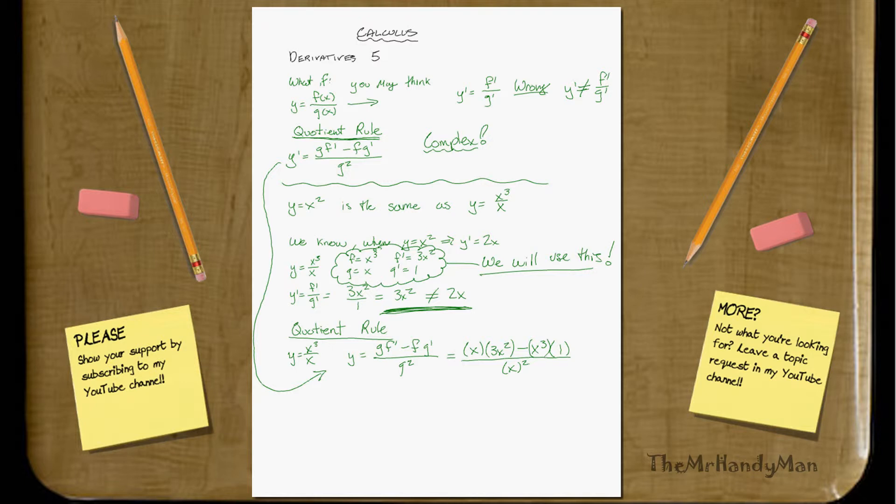So as we work this out, you'll see that we have... this equals 3x cubed minus x cubed all over x squared. You see it yet? That's 2x cubed over x equals 2x.